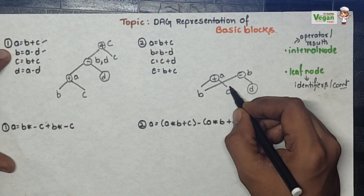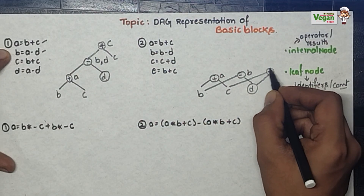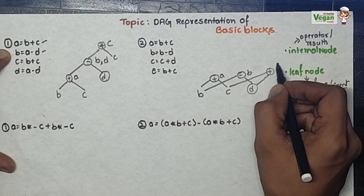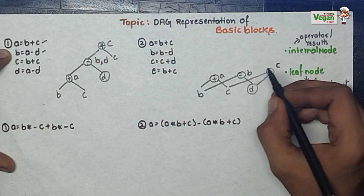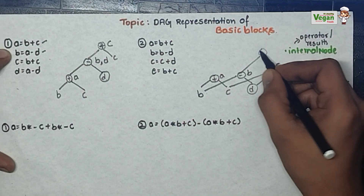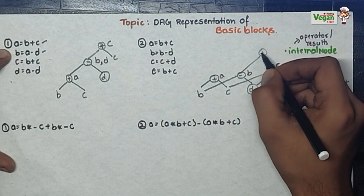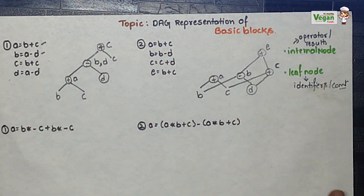Next, C is equal to C plus D — C is here and D is here, so if I add them the result will be C. Last one: E is equal to B plus C, so B plus C will be equal to E. Now we are done with the two problems of the first type.